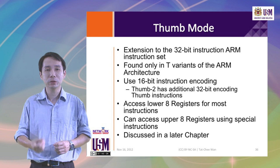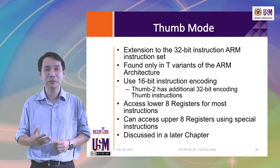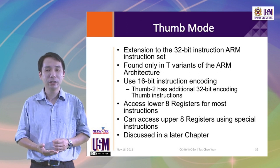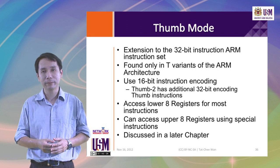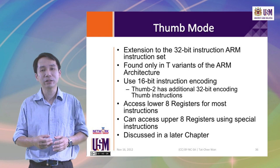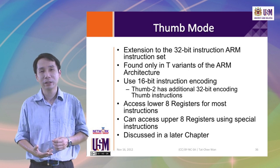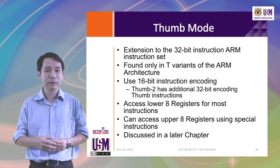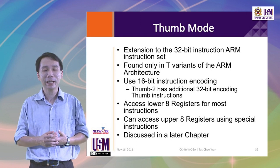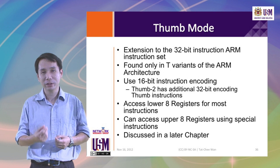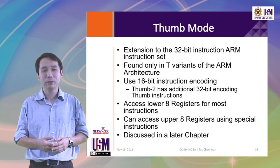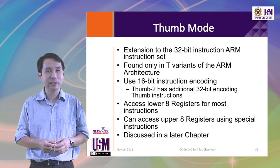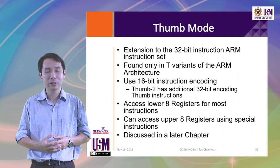Finally, we have the thumb mode, which is an extension to the 32-bit instruction set of the ARM architecture. Thumb mode is found only in T variants of the ARM architecture and provides 16-bit instruction encoding. There is also Thumb-2, which has additional 32-bit encoding of thumb instructions found in more advanced ARM microprocessors. However, for this course we will focus only on thumb mode. Thumb mode has some restrictions — you can only access the lower 8 registers in most instructions. We can access the upper 8 registers using special instructions.